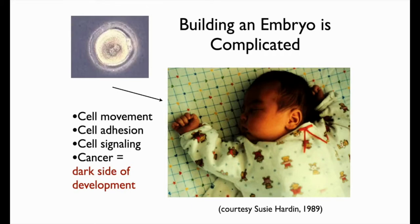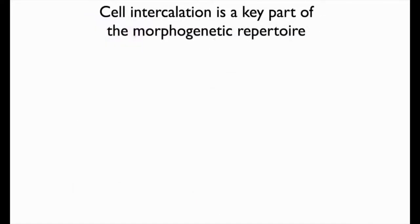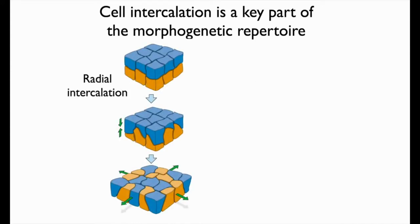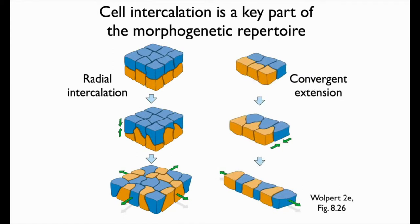One of the bodybuilding movements that cells in embryos engage in is cell intercalation — a key part of the morphogenetic repertoire in animal embryos. There are two basic kinds. First is radial intercalation, where blue and orange cells move between one another, starting as two rows and moving orthogonal to their arrangement to create a single layer that covers more surface area.